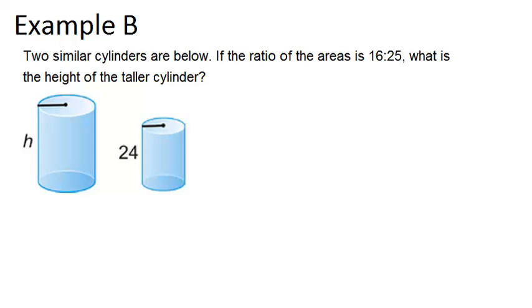In example B, it says two similar cylinders are below. If the ratio of the areas is 16 to 25, what is the height of the taller cylinder? So we're given a ratio of areas.